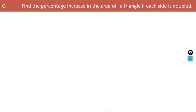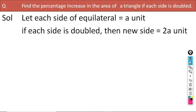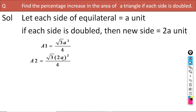Let us try another problem. Find the percentage increase in the area of a triangle if each side is doubled. Let us consider an equilateral triangle with side 'a' units. If each side is doubled, the new side becomes 2a. The original area A1 = (√3/4)a². The new area A2 = (√3/4)(2a)² = (√3/4) × 4a².